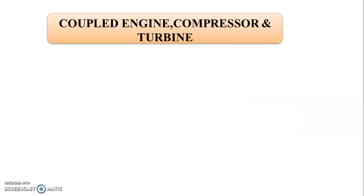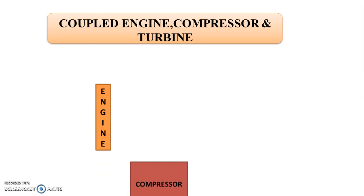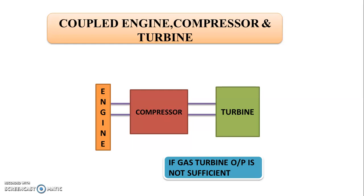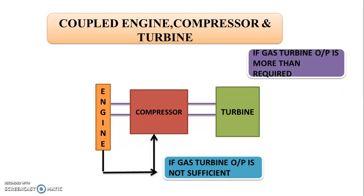The next method is coupled engine, compressor and turbine. Here, the engine, compressor and turbine are all coupled together with gearing. If the output of the gas turbine is not sufficient to run the compressor, then the engine can supply the additional power to the compressor. And if the gas turbine output is more than required to compress the air, in this case the extra power of the turbine is fed back to the engine.